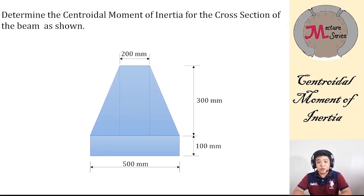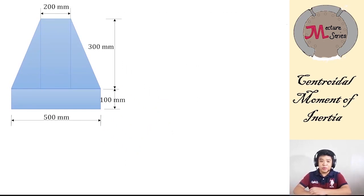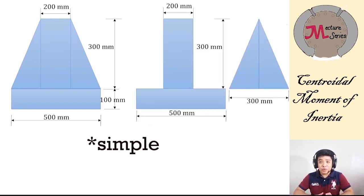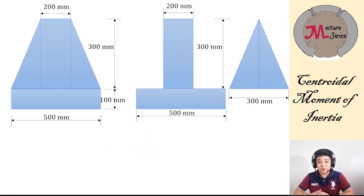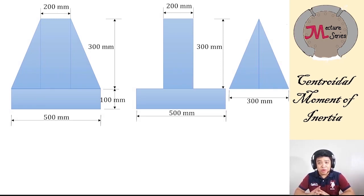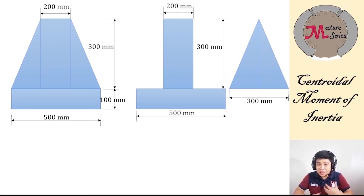Determine the centroidal moment of inertia for the cross section of the beam as shown. The first thing to do is divide the section into its composite figures with known areas, centroids, and other properties. Before watching this video, you must learn how to locate the centroid of common figures such as triangles, circles, and rectangles. Before getting the centroidal moment of inertia using the conventional way, you have to locate first the neutral axis of the section, which is technically the centroid of the whole section.